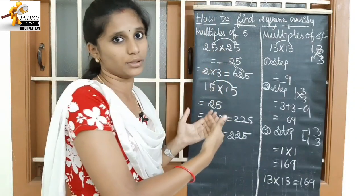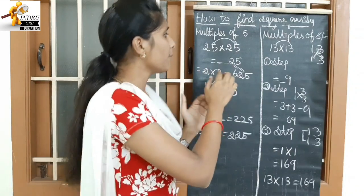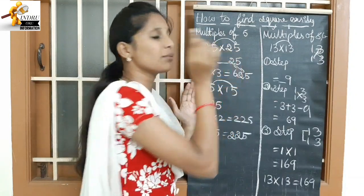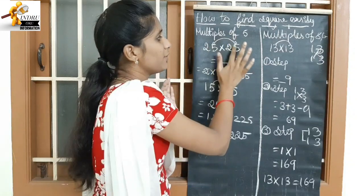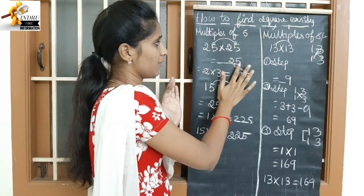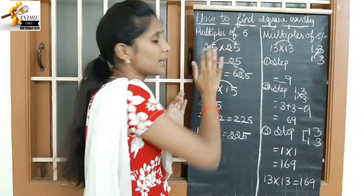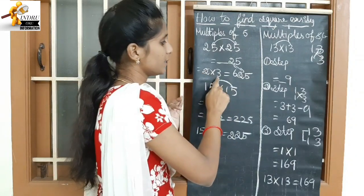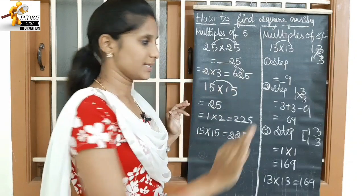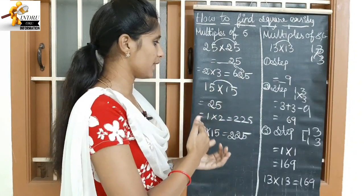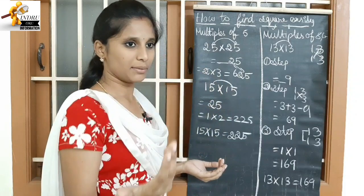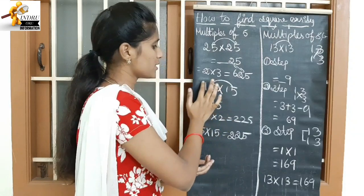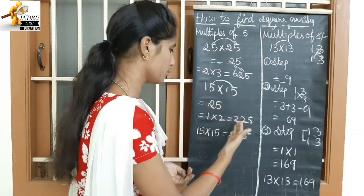So how do we use this step? Now, 25 into 25 — let's take a look. Normally for multiples of 5, I have 25. So 5 into 5 is 25 — that's the first step. Now look at this: there is 2, so 2 becomes 3, and 2 into 3 is equal to 6. Then 25 squared is equal to 625. Next example: 15 into 15, the answer is 225. As I said, 5 into 5 is 25. Then 1 and 1 into 2 is 2. So the answer is 225.